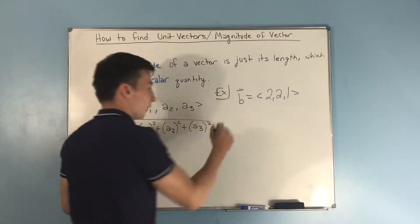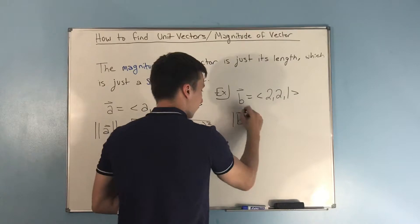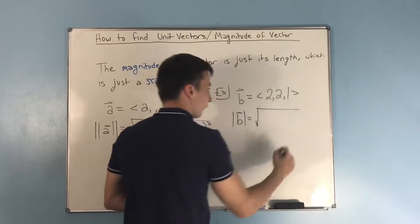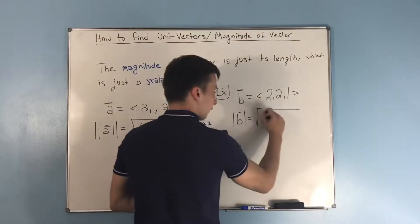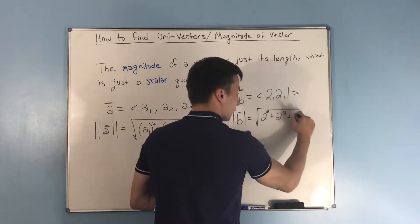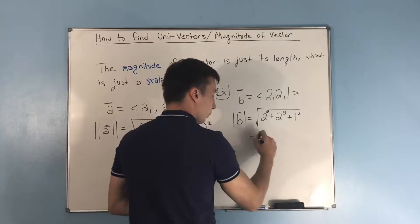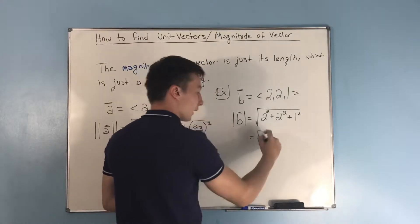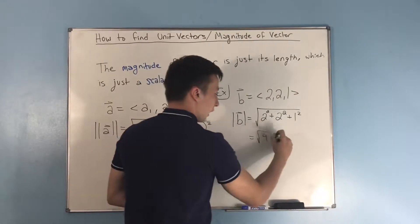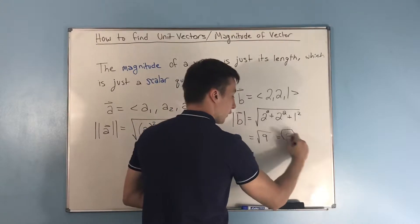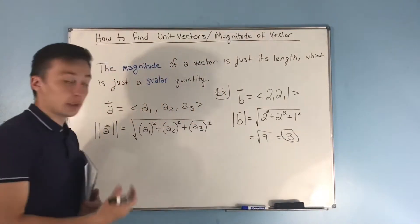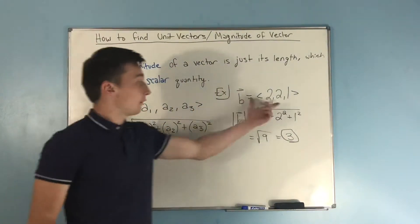Well, if we want to find the magnitude of that, that's just going to be 2 squared plus 2 squared plus 1 squared. That is equal to 4 plus 4 plus 1, that's square root of 9, and that's equal to 3. So the magnitude of b is just 3. That's the length of this vector.